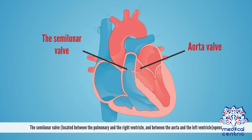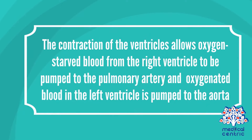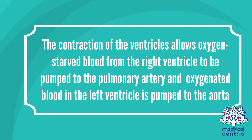The semilunar valve, located between the pulmonary artery and the right ventricle, and between the aorta and the left ventricle, opens. The contraction of the ventricles allows oxygen-starved blood from the right ventricle to be pumped to the pulmonary artery, and oxygenated blood in the left ventricle is pumped to the aorta.